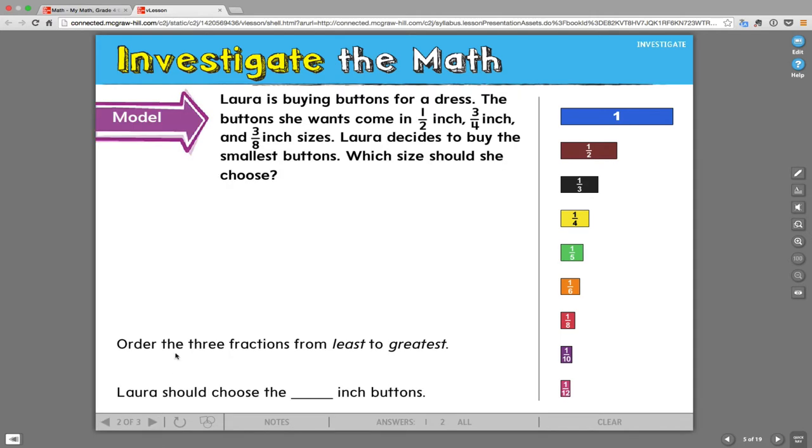Laura is buying buttons for a dress. The buttons she wants come in one-half inch, three-fourths inch, and three-eighths inch sizes. Laura decides to buy the smallest buttons. Which size should she choose?